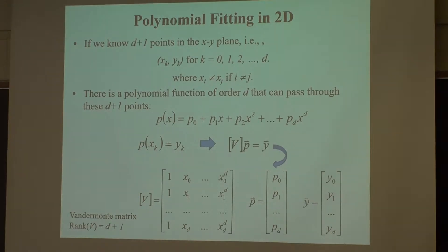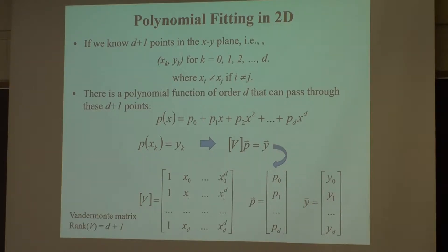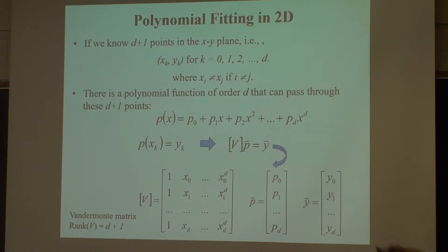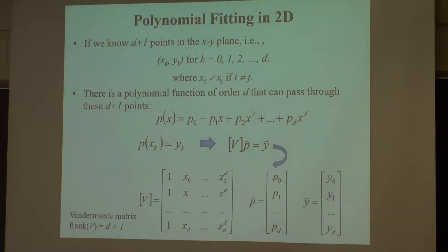The simple thing — you may have been introduced to this in calculus. If you have D plus 1 points, indexed from 0 to D, these are fixed points in 2D in a planar Cartesian coordinate. If you have D plus 1 points, you know that if I have a polynomial function of order D, I will be able to pass through all these points. This always exists as long as two points don't have the same X value — that is, when X is different, two points always have different Y.